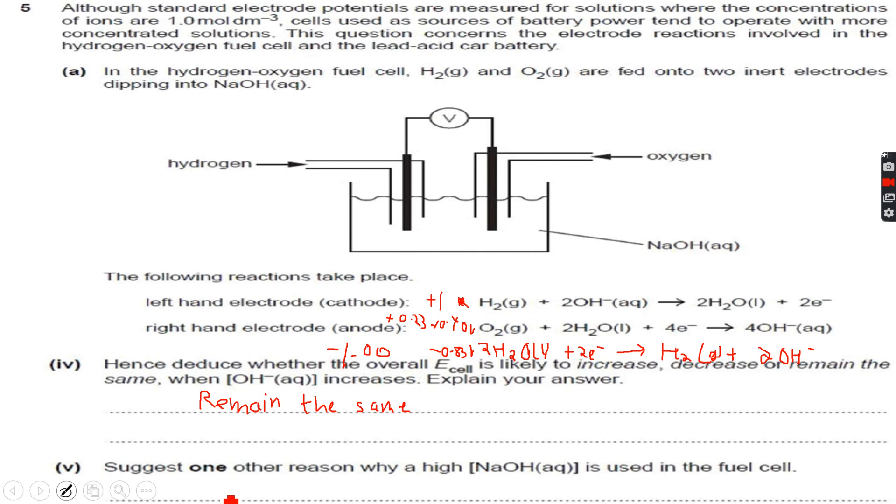One reason why high NaOH concentration is used in the fuel cell is to increase conductivity. NaOH provides Na+ and OH- ions, and the higher the number of ions, the higher the conductivity.